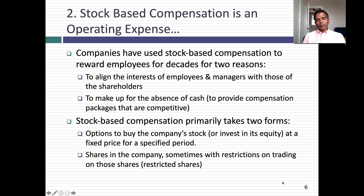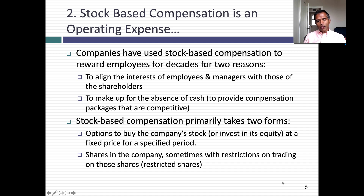Now let's move on to stock-based compensation. Until the 1980s, stock-based compensation was rare — maybe a couple of people got it. But starting in the 90s, it became much more common. There are two motivations: one is to align the interests of employees and managers with those of stockholders. But here's the bigger reason — you know why stock-based compensation took off in the 90s? Because a lot of young companies that were losing money couldn't afford to pay cash salaries, so they paid employees with stock. When you think about stock-based compensation, think about why companies are using it — for the most part, because they don't have the cash.